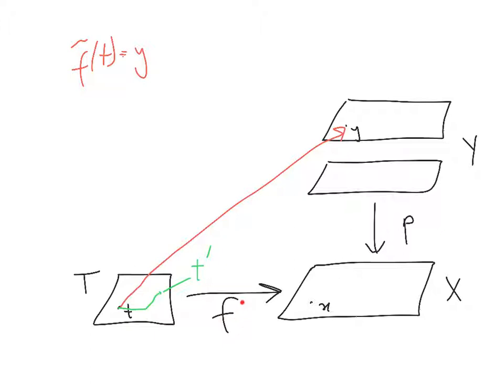If I restrict F to this path, I get a path in X. By path-lifting, I get a unique path starting at y lifting that path. So I define the endpoint of that lifted path to be F̃(T′). That's the construction of F̃. Of course I still need to check various things: that this map is a lift of F, that it's the unique lift satisfying the initial condition, that it's well-defined (since it depends on a choice of path), and that it's continuous.